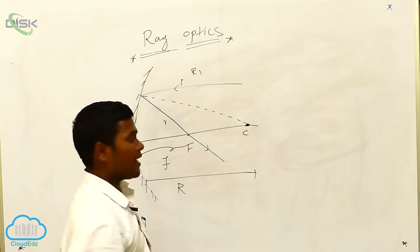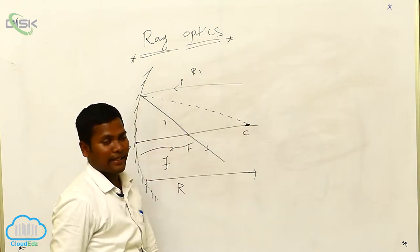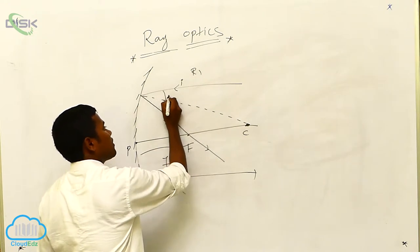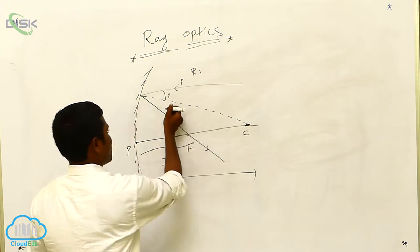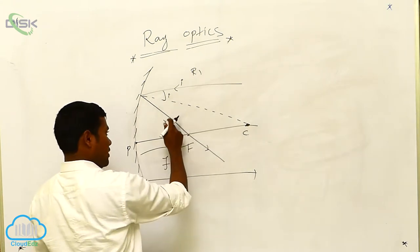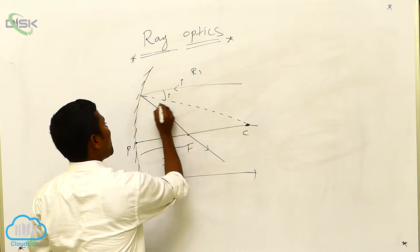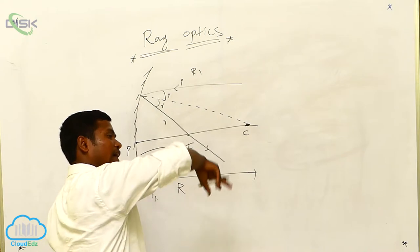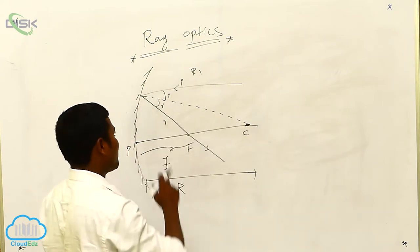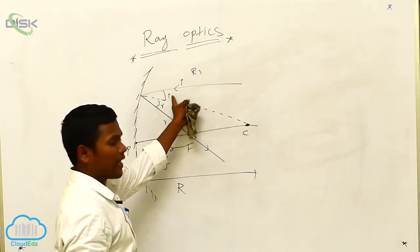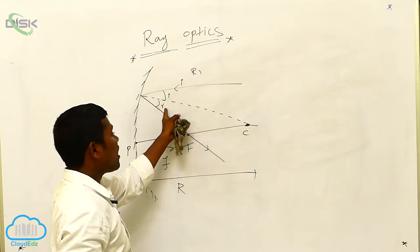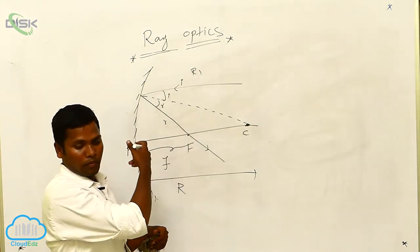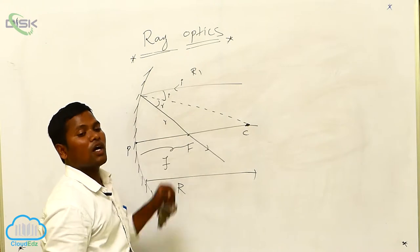The angle between the incident ray and the normal line is called the angle of incidence; the angle between the reflected ray and the normal line is called the angle of reflection. We already discussed this for the plane mirror — the same applies here. You can find this angle for both the convex mirror and the concave mirror as well.